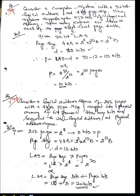Consider a logical address space of 256 pages with 4KB page size, mapped into physical memory of 64 frames. How many bits are required in the logical address space and the physical address space? This problem has two sections: the logical address space and the physical address space. It is given that there are 256 pages, so 256 = 2 to the power of 8, that is 8 bits for the page number.